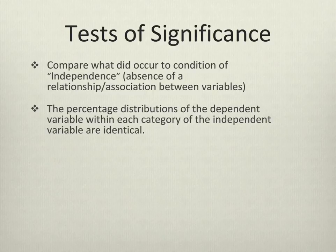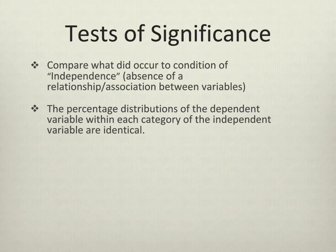Tests of significance compare what would have happened in the condition of independence — if there was absolutely no association between the two variables — and what actually happened. If what would have happened due to random chance is very different from what actually happened, that's a clue that we're going to find a statistically significant relationship. Using inferential statistics, we estimate the likelihood that the difference we found in our sample also exists in the population. If we're 95% confident that the difference we found in our sample also exists in the population, we call that a statistically significant relationship.